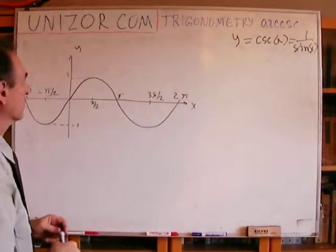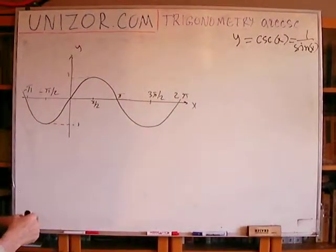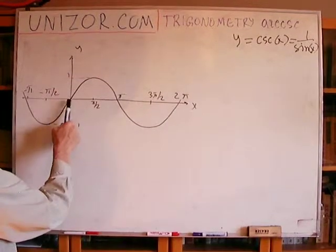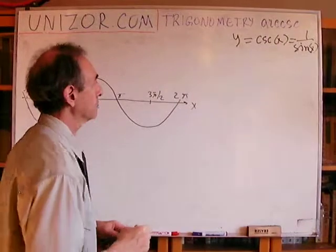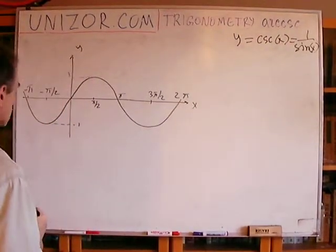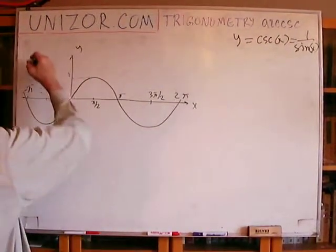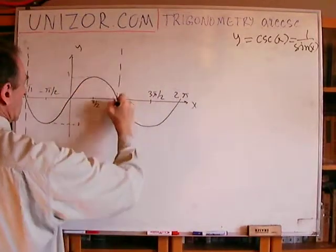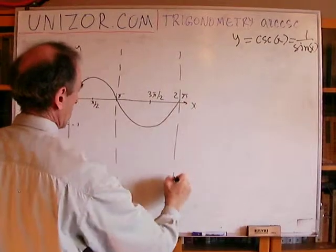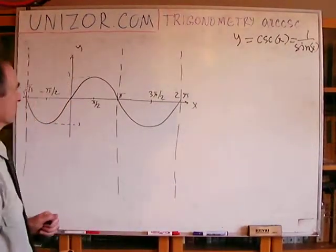Now, let's turn it around. 1 over sine. Well, obviously, those points where the sine is equal to 0, we will have asymptotes. So these are asymptotes.